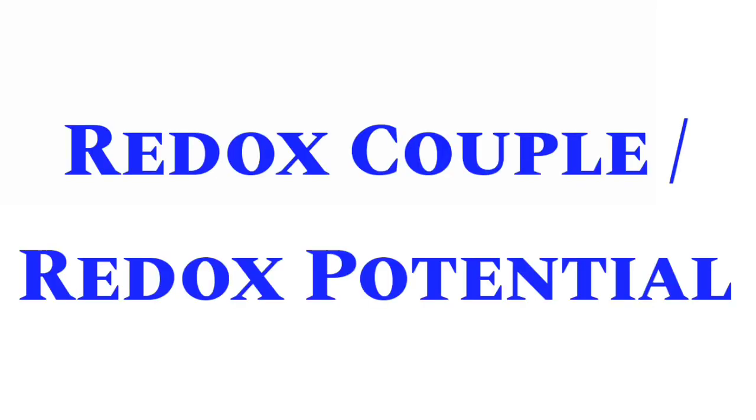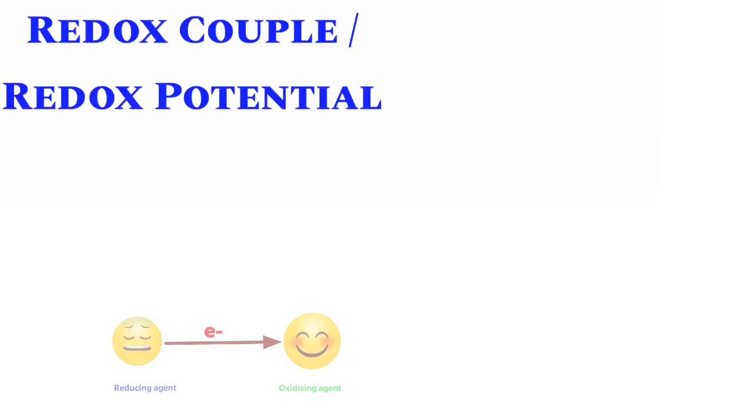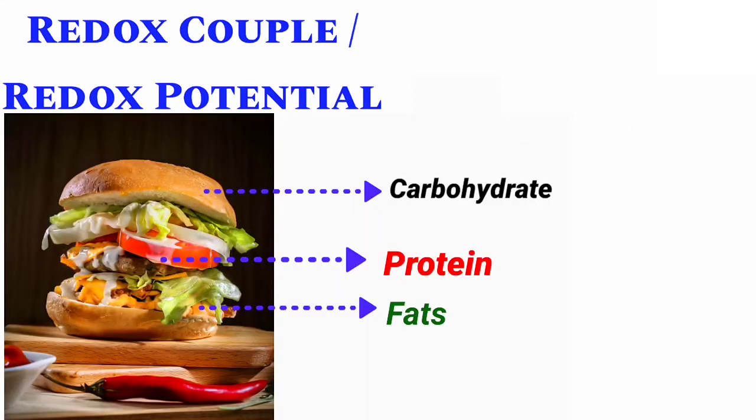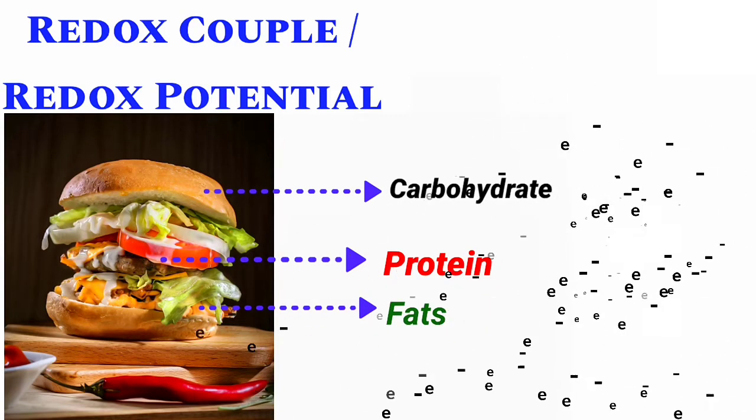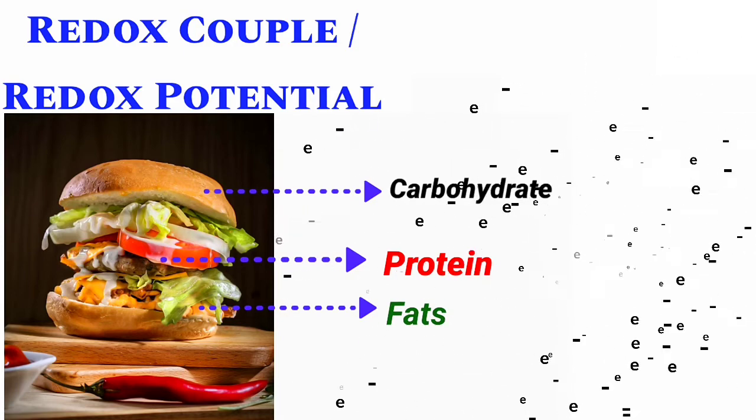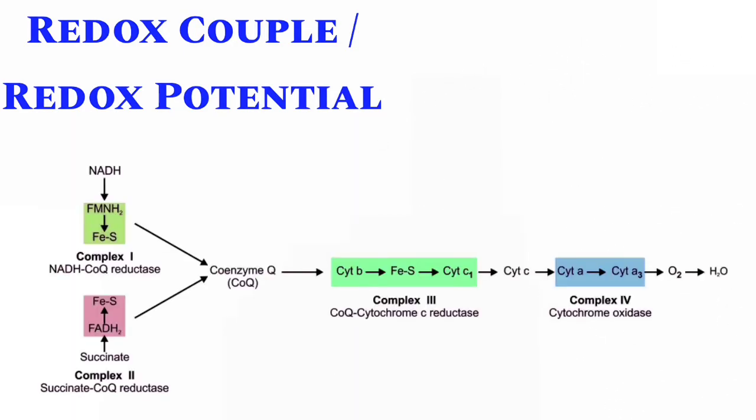Hello everyone, this video is about Redox Couple and Redox Potential. In one of the previous videos on biological oxidation and electron transport chain, we discussed that the energy in foods is extracted in the form of electrons. These electrons enter into the electron transport chain, and due to their flow, energy is released. This energy is used for the synthesis of ATP.